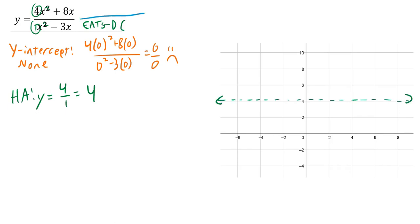Next I factor. This factors on top to 4x times (x plus 2), over x times (x minus 3). Remember this x and this x are the same—there's a common factor. I'm looking ahead and I see something's going to cancel.